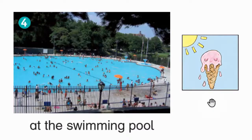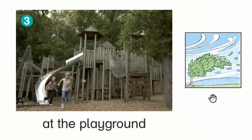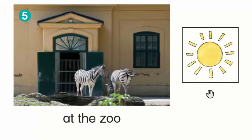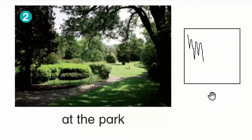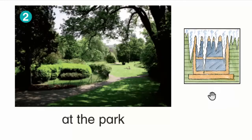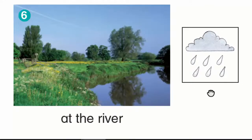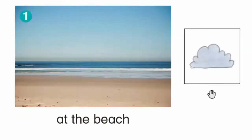A: Where is it hot? B: Where is it windy? C: Where is it sunny? D: Where is it cold? E: Where is it rainy? F: Where is it cloudy?